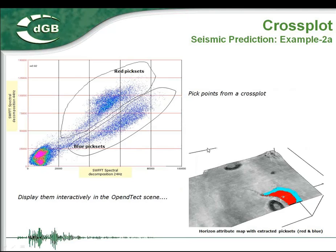Another cross-plot example: this is extracted from a bright spot on a seismic section offshore Netherlands. It highlights a bright spot which shows a split when cross-plotting low frequencies versus relatively high frequencies. If you select one cluster, you display a separate part of the bright spot. If you select the other cluster, you highlight a different part. In this way you can interactively communicate with the OpenDetect scene to predict seismic objects and their relationships. The split is due to change in tuning thickness because of gas saturation or gas column.